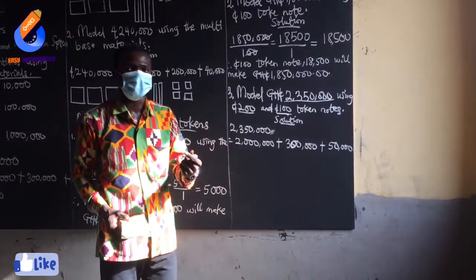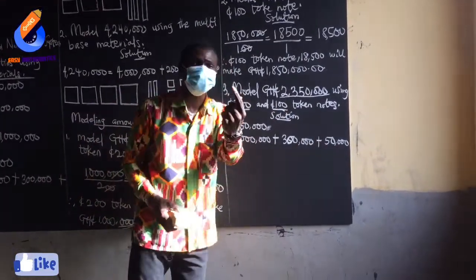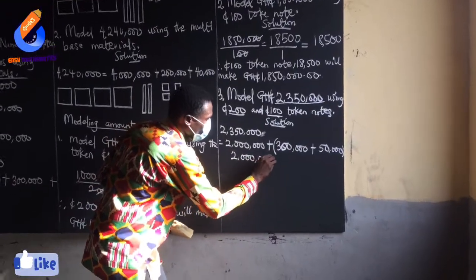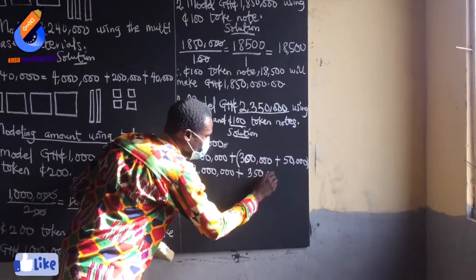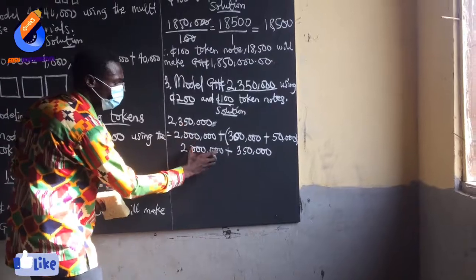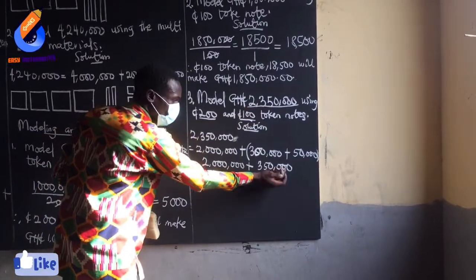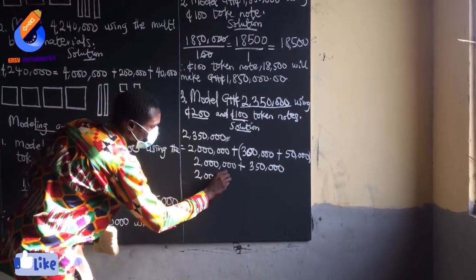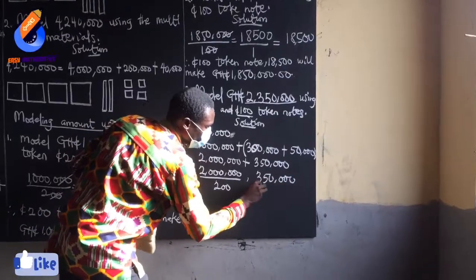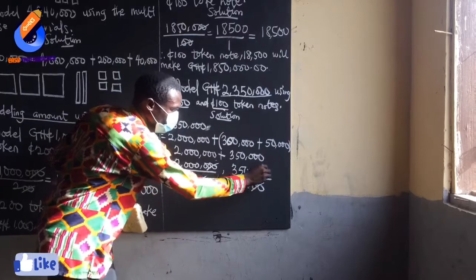When I expanded, I have 3 terms. But how many tokens was I given? 2 tokens. So I have to group this expansion into 2 terms. Adding the last two together: 2,000,000 plus 350,000. Now I have expanded this number into two terms.